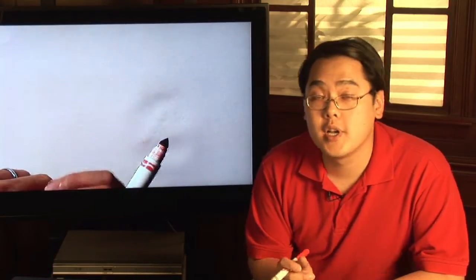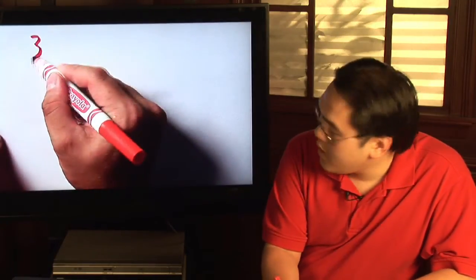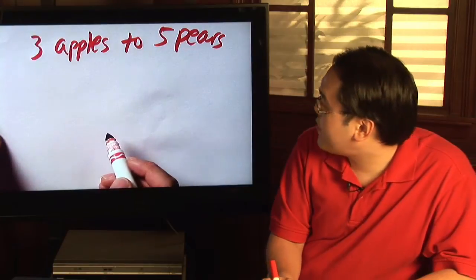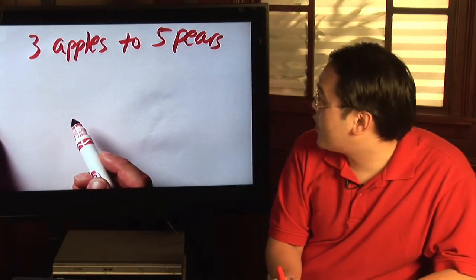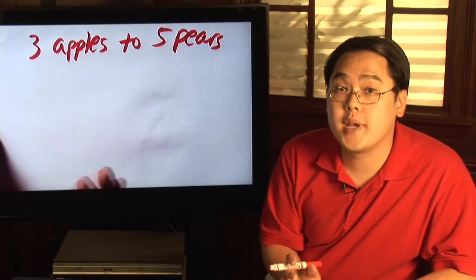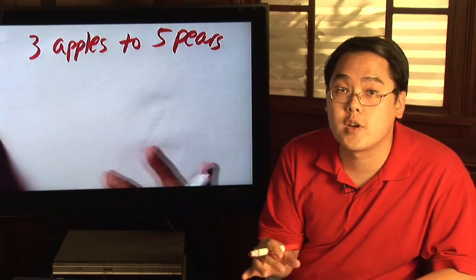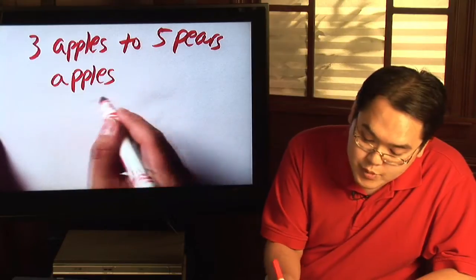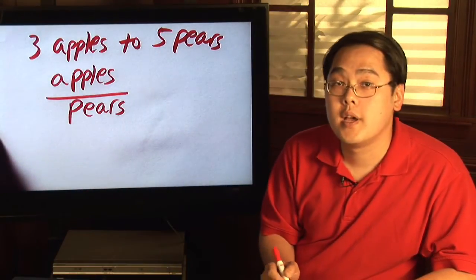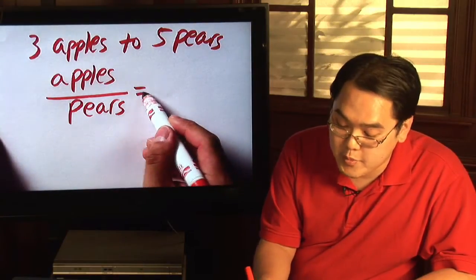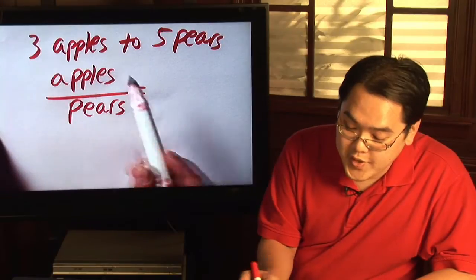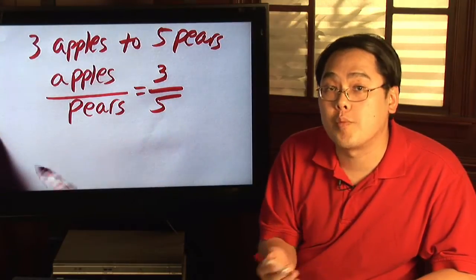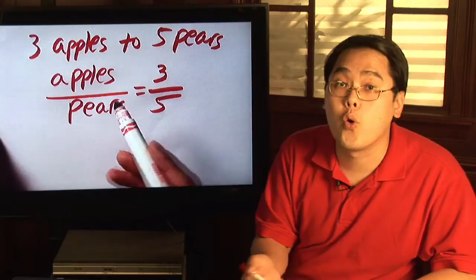You need to figure out what kind of ratio or proportion to set up. For example, if you have three apples to five pears, you can create a ratio instantly. You have to decide which variable is the numerator and which is the denominator. Since apples is mentioned first, you can write apples over pears — three over five, or three-fifths.